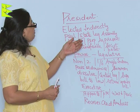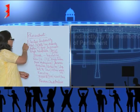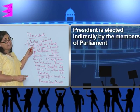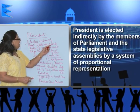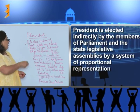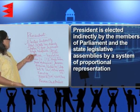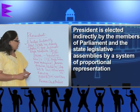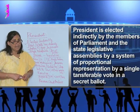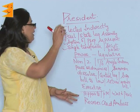As far as the election of the President is concerned, first of all we must know that he is elected indirectly by the members of the Parliament and the state legislative assemblies who have been directly elected by the people. He is elected by the system of proportional representation by a single transferable vote in a secret ballot system.